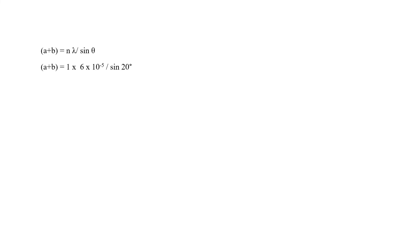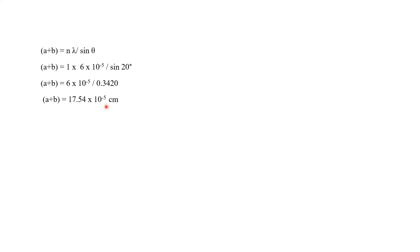Putting in the values: a+b = (1 × 6×10⁻⁵) / sin 20°. For sin 20° we get the value 0.3420. Doing the calculation, a+b equals 17.54×10⁻⁵ centimeter.